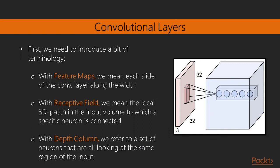So in convolutional layers we operate pretty much in the same manner but first we need to introduce a bit of terminology. With feature maps we mean each slice of the convolutional layer along the depth. With receptive field we mean the local 3D patch in the input volume to which a specific neuron is connected. And with depth column we refer to a set of neurons that are all looking at the same region in the input volume.